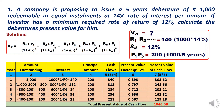The table columns are: year, amount outstanding, interest, principal amount, cash flow, present value factor at 12 percent (Kd), and present value of cash flow. In year one, the outstanding amount is 1000. Interest = 1000 into 14 percent = 140. The principal installment is 200 rupees. So cash flow = interest 140 plus principal 200 = 340.